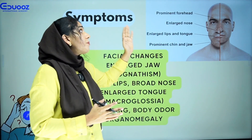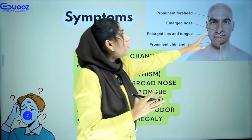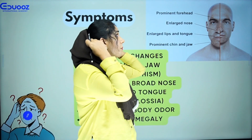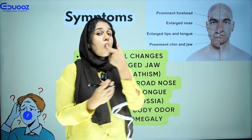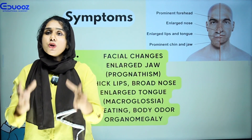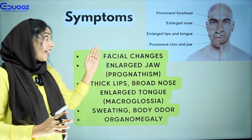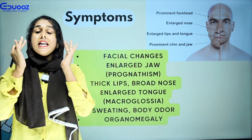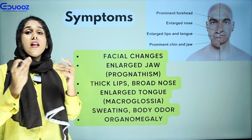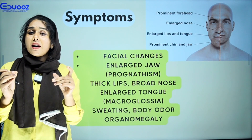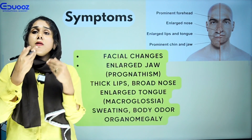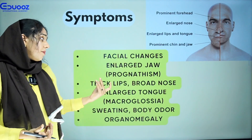Looking at the features of acromegaly: the nose is enlarged, lips and tongue are prominent, and the chin and jaw are prominent. There are facial changes including prognathism. Lips are thick and broad, the nose is thick, and there is an enlarged tongue called macroglossia.